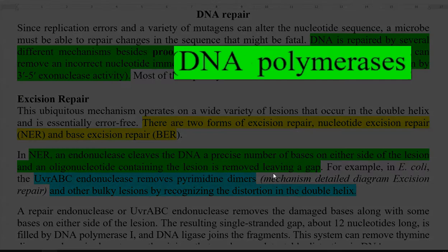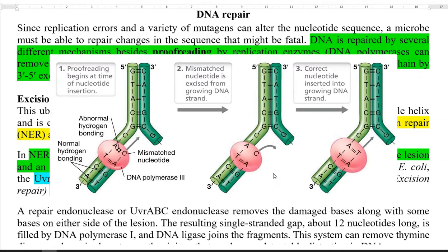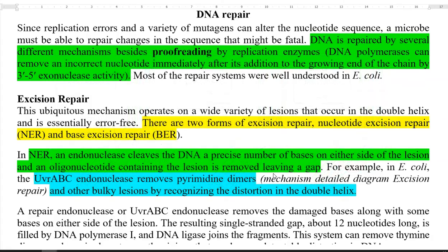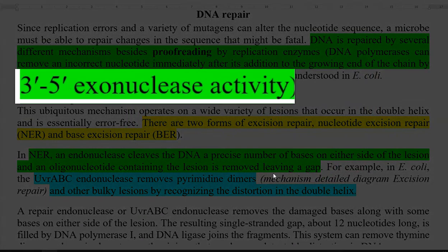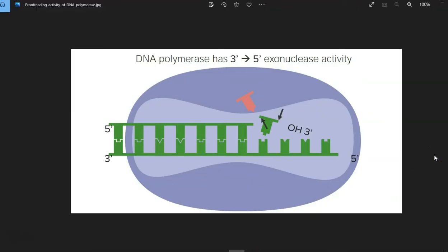You all know about DNA polymerase. DNA polymerase is an enzyme involved in the replication of DNA. At the same time, it has the ability to remove incorrect nucleotide bases that may be inserted during the process of replication. That is, it can have a 3' to 5' exonuclease activity through which an incorrect nucleotide that has been inserted can be easily removed.